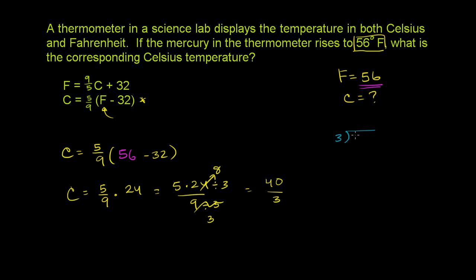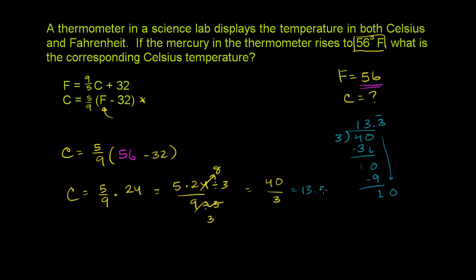3 goes into 4 one time. 1 times 3 is 3. Subtract — 4 minus 3 is 1. Bring down the 0. 3 goes into 10 three times. 3 times 3 is 9. Subtract — get a 1. And then bring down another 0; we now have a decimal point. 3 goes into 10 three times again, and this 3 is going to repeat forever. So this is equal to 13.333... — this little line on top means repeating degrees Celsius.